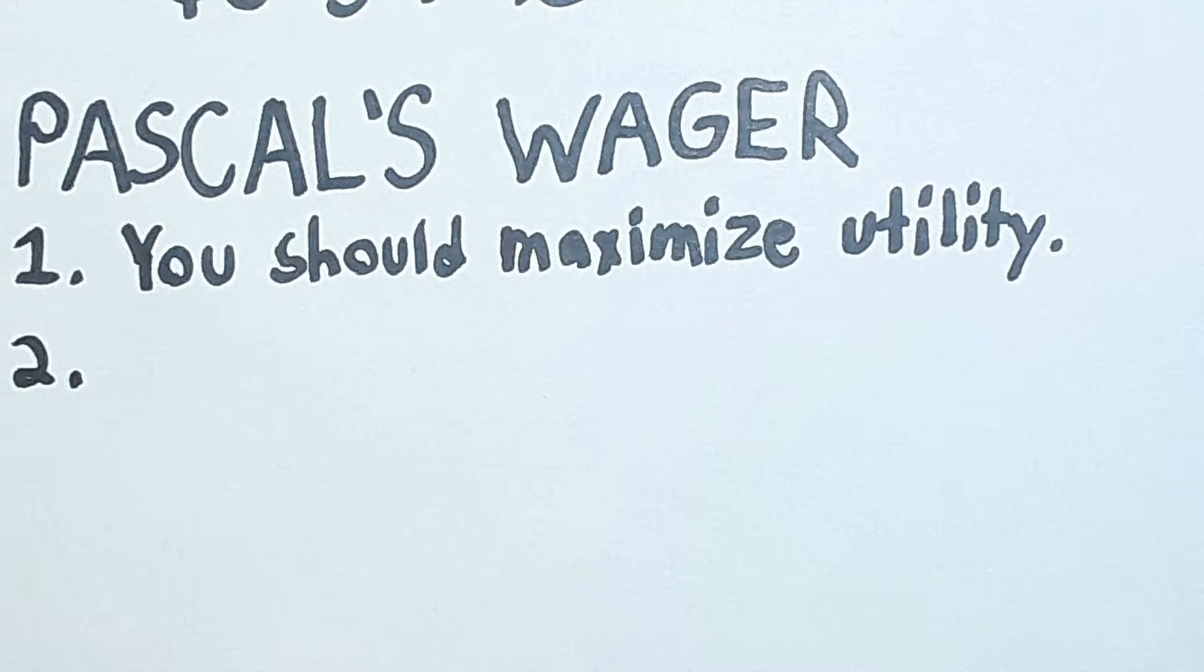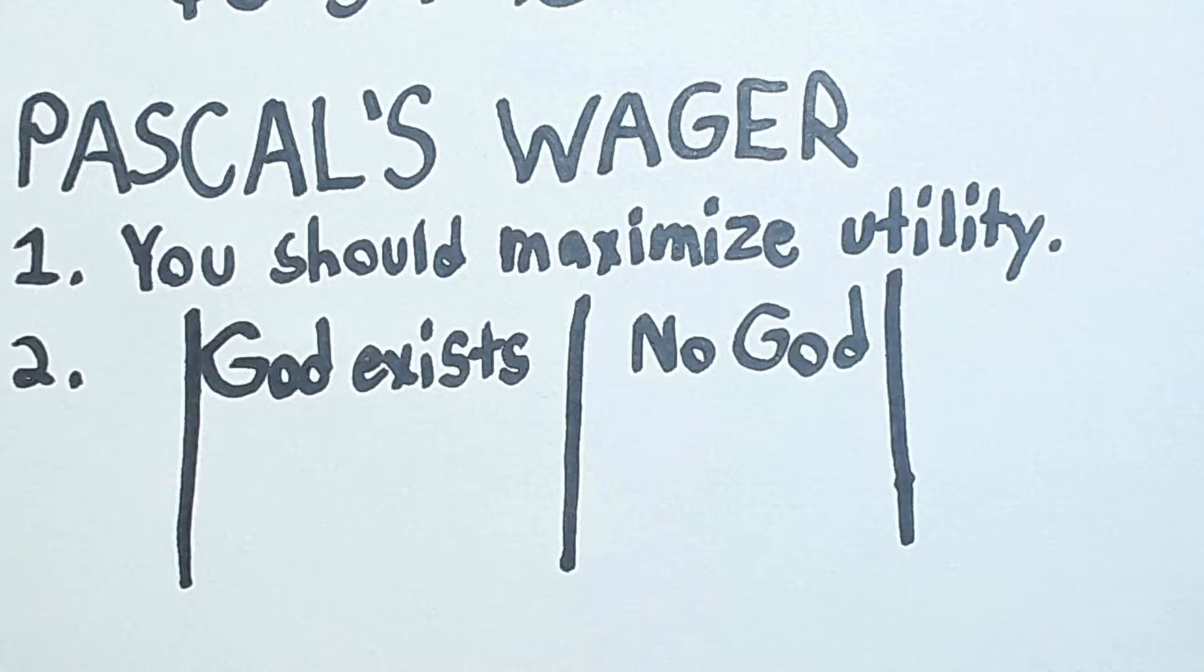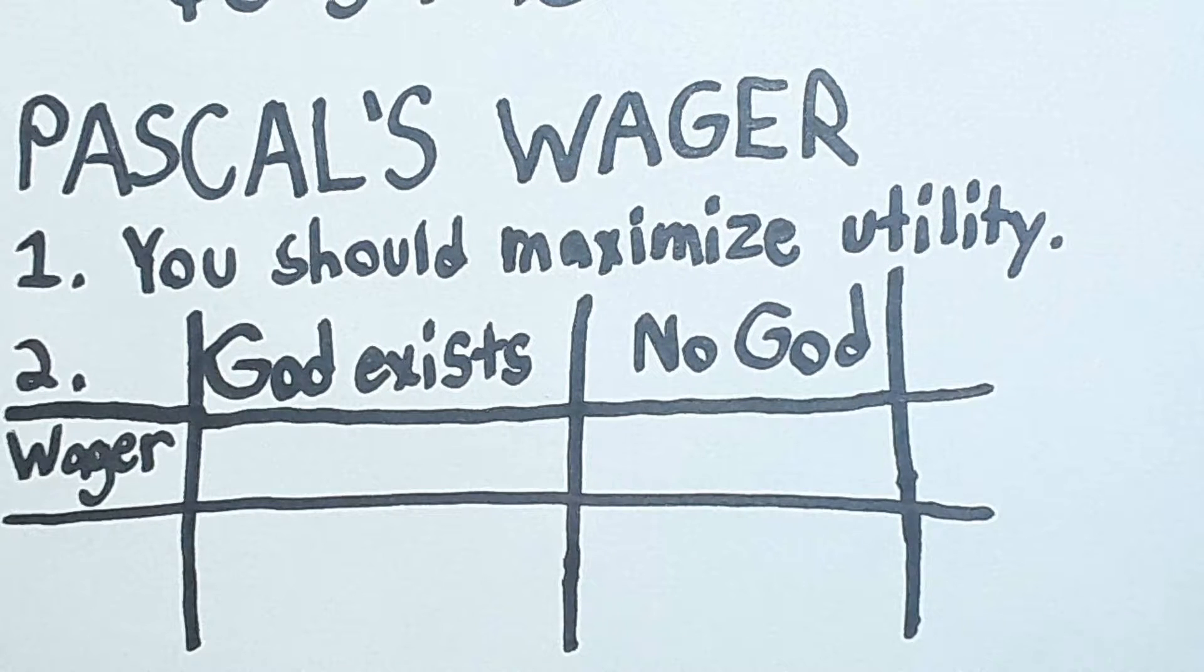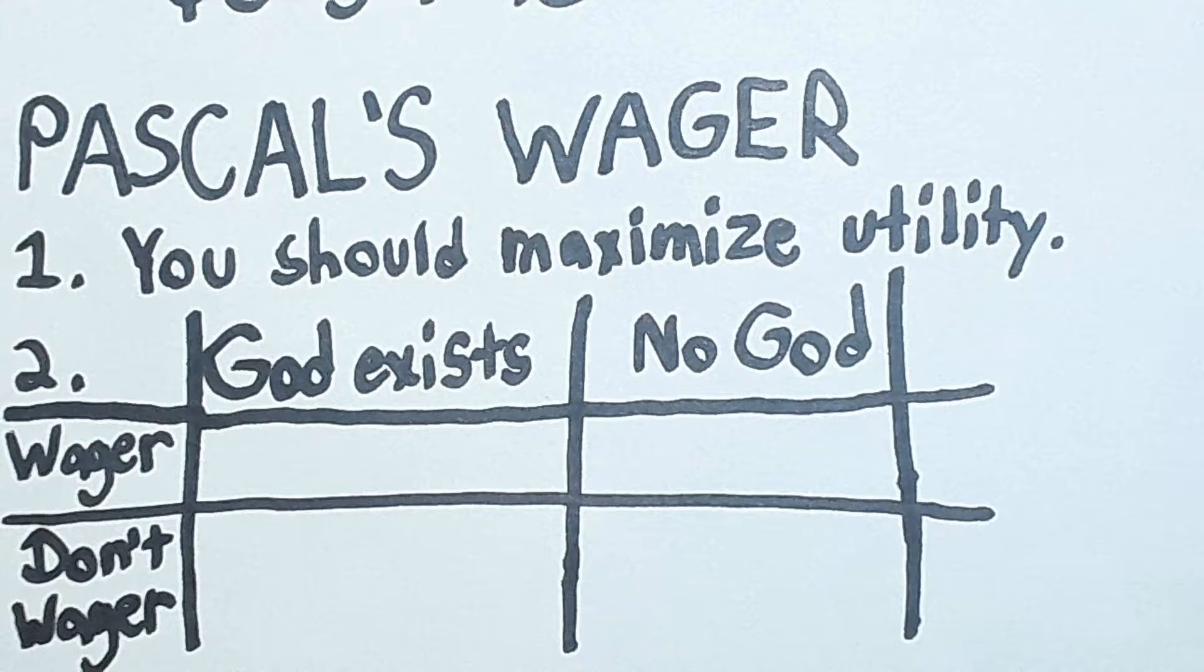Now, the second part of Pascal's Wager is setting up a decision matrix where we see the possible options we are faced with. The options we are faced with is that either God exists or he doesn't. You can also either wager on God and worship him and follow him, or you can not do that and live however you want.